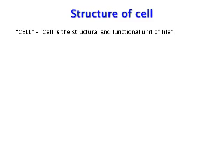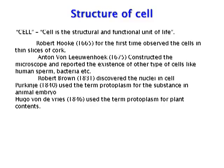Structure of Cell. Cell is the structural and functional unit of life. Robert Hooke in 1665 for the first time observed the cells in thin slices of cork. Anton von Leeuwenhoek in 1675 constructed the microscope and reported the existence of other types of cells like human sperm and bacteria. Robert Brown in 1831 discovered the nucleus in the cells. Purkinje in 1840 used the term protoplasm for the substance in an animal embryo. Hugo von Mohl used the term protoplasm for plant contents.